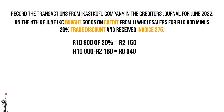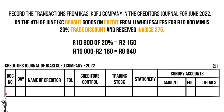So let's go back to the journal. The document number will be 001 — remember, we renumbered the invoices. The day is the 4th of June. The name of the creditor will be JJ Wholesalers. The creditor's control column will be 8,640 rand, and the same amount will be recorded in the trading stock column of Ikasi Coffee Company because they bought trading stock.